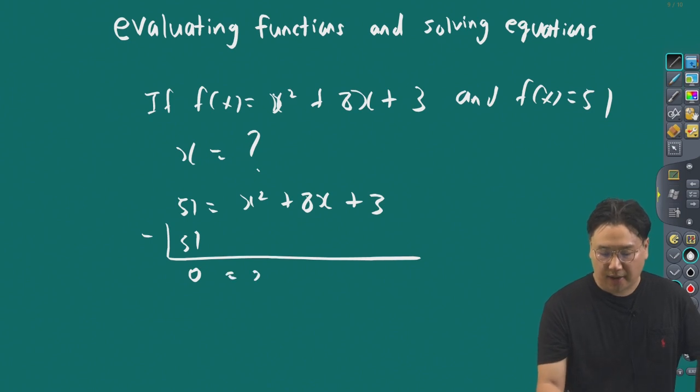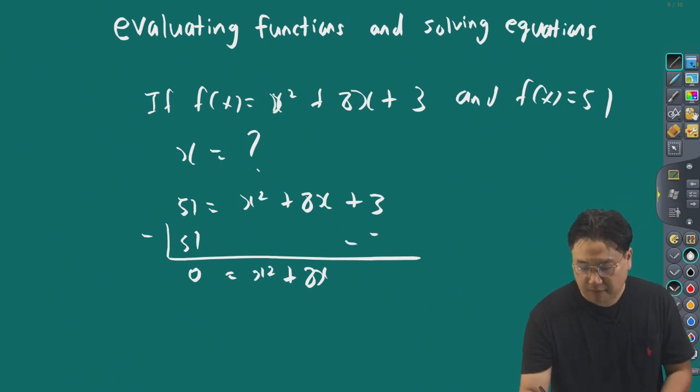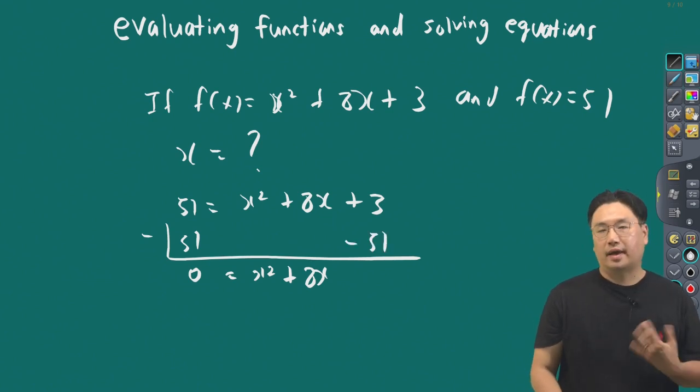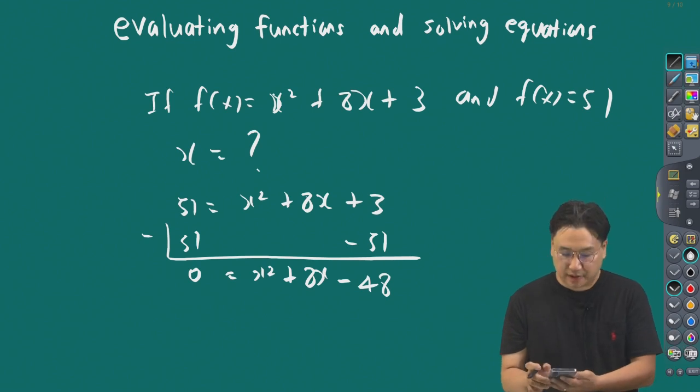This equals x squared plus 8x, and the plus 3 minus 51 gives us negative 48. So this is the equation we need to work on: 0 equals x squared plus 8x minus 48.